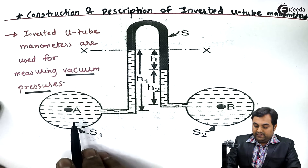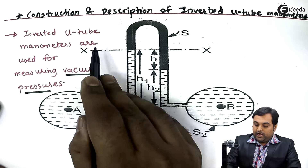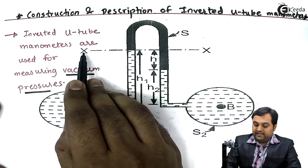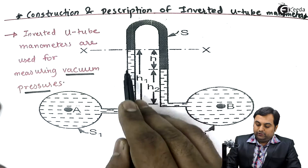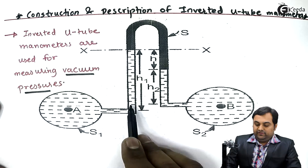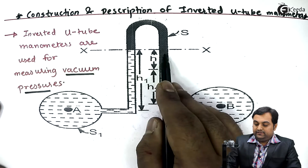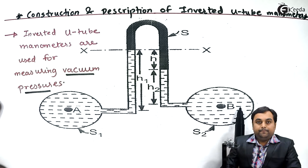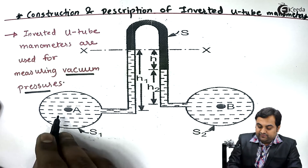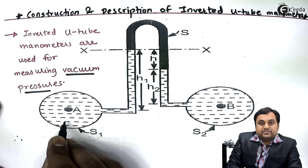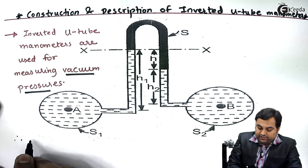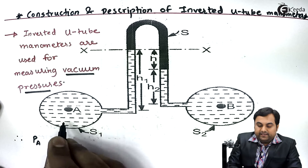Now for the calculation of the difference in pressure, we need to balance the left limb and the right limb. As we can see, there is section XX. Below this we have the left limb and the right limb. So to balance this, I'll write: pressure in pipeline A...